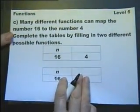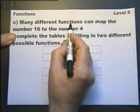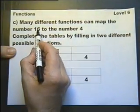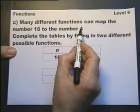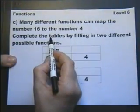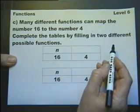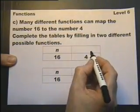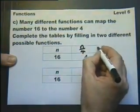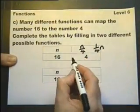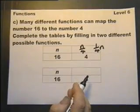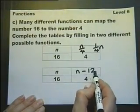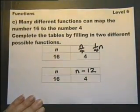This continues the question, part C on functions. How many different functions can map 16 to the number 4? So there's lots of ways we could change 16 into 4. Complete the table by filling in two different possible functions. So it could be divide by 4. Now I could write that as N over 4, or I could write it as quarter N, so dividing by 4. Another way could be in fact to subtract 12. And there would be many other ways that I could have done it.